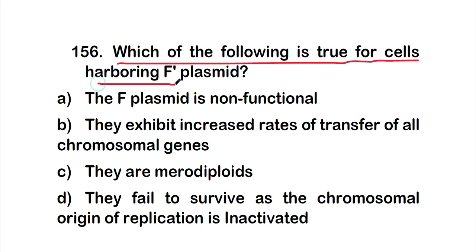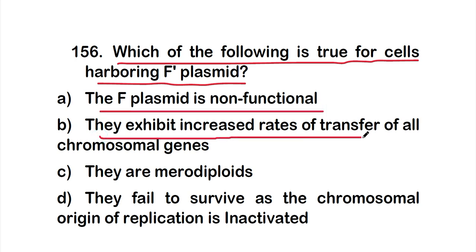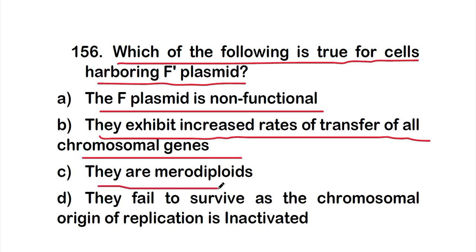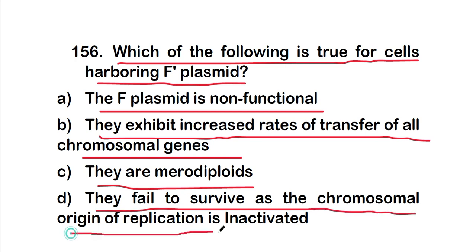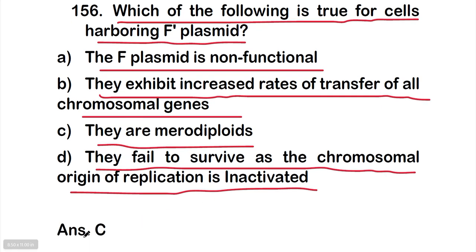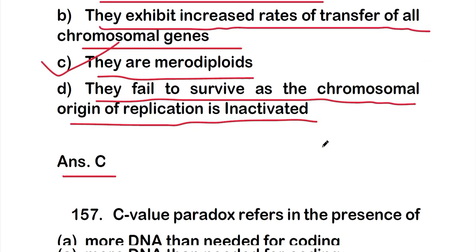Question 156: Which of the following is true for cells harboring an F-prime plasmid? Options: A — the F plasmid is non-functional; B — they exhibit increased rate of transfer of all chromosomal genes; C — they are merodiploid; D — they fail to survive as the chromosomal origin of replication is inactivated. The correct answer is option C — they are merodiploid.